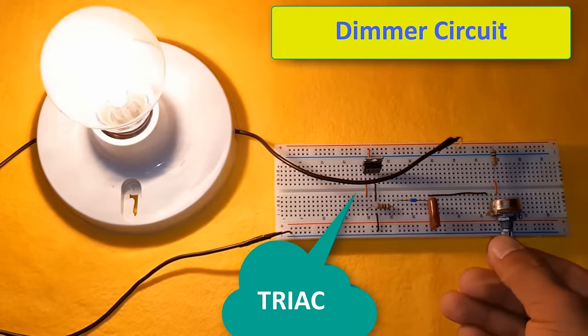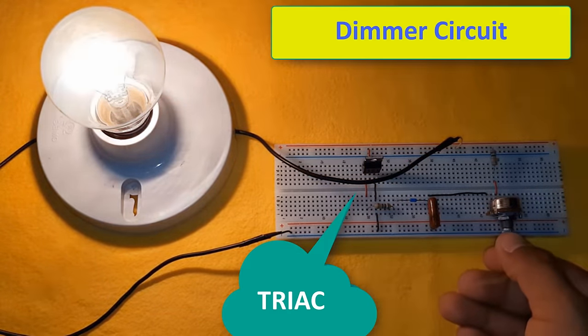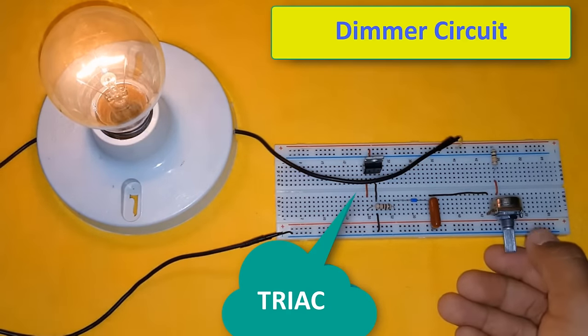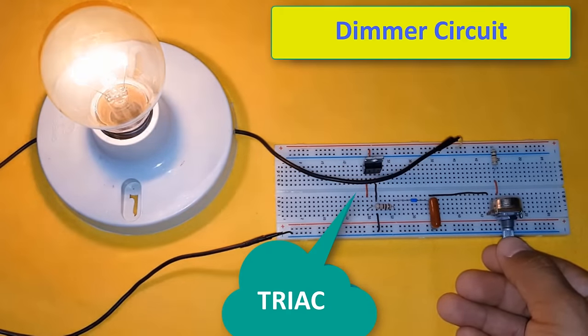In other words, while thyristor is mostly used for DC power applications, we can say that TRIAC is more suitable for use in AC power applications.